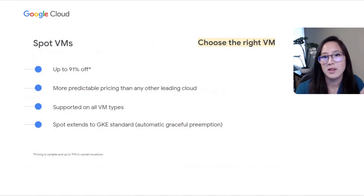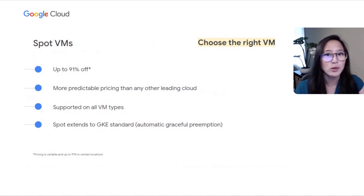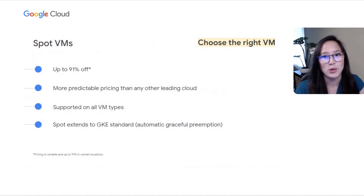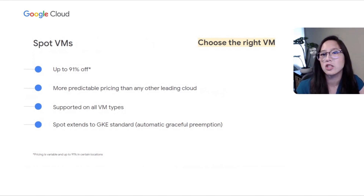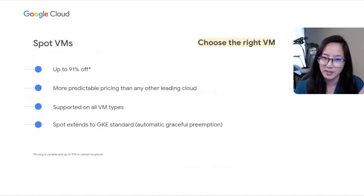Like preemptible VMs, Spot VMs are ideal for flexible, fault-tolerant workloads like Batch, CI/CD, and HPC. But with Spot VMs, there is no 24-hour limit, so you can run workloads on Spot for longer periods. You can secure deep discounts on all VM types, including custom machine types with à la carte GPUs and local storage. Spot also extends to GKE Standard, so you can automatically save on underlying compute costs while gracefully handling preemption.